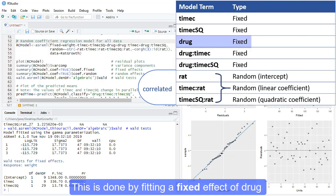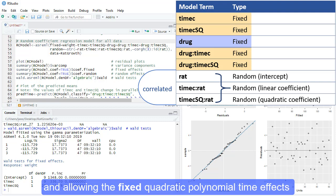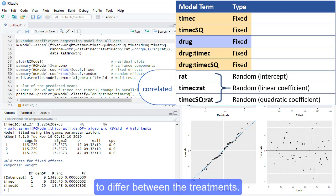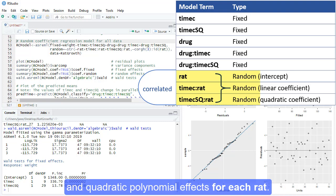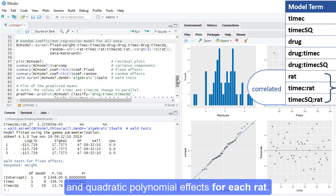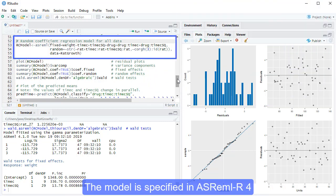This is done by fitting a fixed effect of drug and allowing the fixed quadratic polynomial time effects to differ between the treatments. As before, we also fit correlated random intercepts and quadratic polynomial effects for each rat. The model is specified in ASREML R4 using the following code.